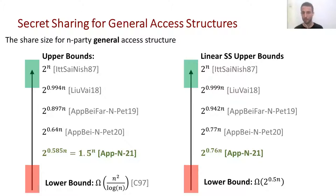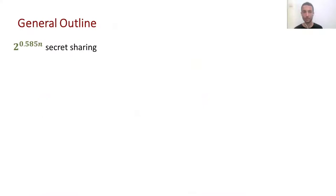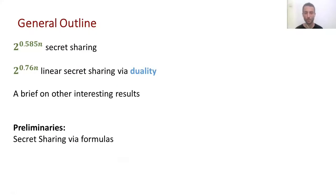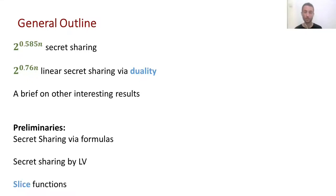This is the universe of secret sharing for general access structures. In the rest of the talk, we'll present how we get to the upper bounds, focusing more on the first one. But first we'll do some preliminaries: how to do secret sharing via formulas, how Liu and Vaikuntanathan did their scheme, and we'll also talk about slice functions, which are in the title of the paper.